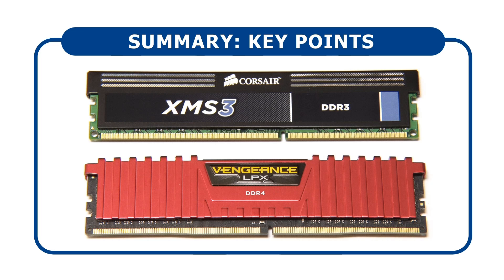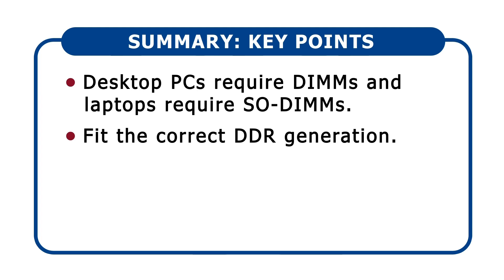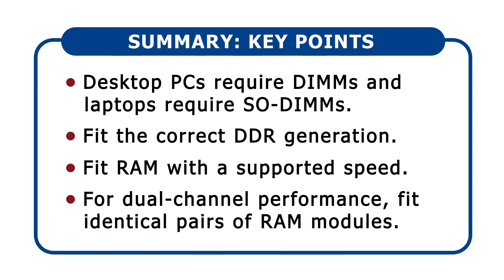So, what do you need to know when selecting RAM for a PC build or upgrade? The key things to note are as follows. Firstly, desktop PCs require DIMMs and laptops require SODIMMs. Secondly, you need to fit the correct DDR generation for your motherboard, as there's no backwards or forwards compatibility — so, for example, you must fit DDR3 RAM into a DDR3 motherboard, DDR4 RAM into a DDR4 motherboard, and so on. Thirdly, you should fit RAM with a speed that is supported by your motherboard, as all motherboards accept several different module speeds, so make sure that the RAM you get is suitable for your board. Finally, where the option is available, obtain dual channel performance by fitting identical pairs of RAM modules according to the colour coding of your RAM slots and the instructions in your motherboard's manual.